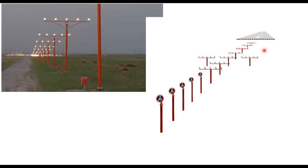All these approach lights are elevated lights. At 300 meters, there is a red bar. And then at the runway threshold, there is a green bar. That is how they are provided.